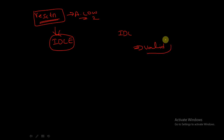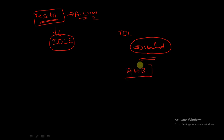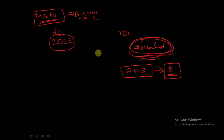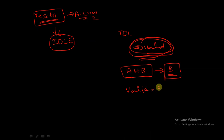This VALID signal is given by the AHB module to our bridge. According to this VALID signal we will decide which state the system should be in. The VALID signal is equal to one when the HTRANS signal is equal to 01 or 10.